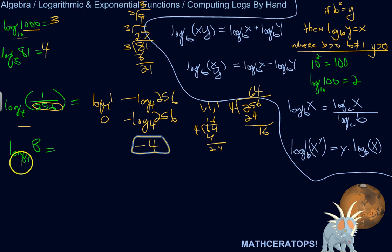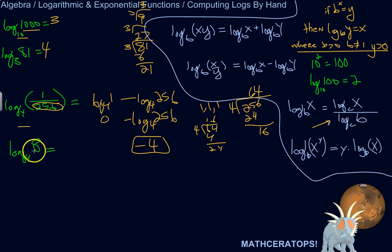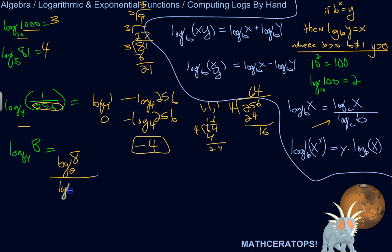Let's look at one more: log base 4 of 8. This is asking to what power do I have to raise 4 to turn it into 8? 4 squared is 16, so it's not a whole number. Think about the change of base property — is there a way to rewrite this so it's easier to calculate? Notice that both 4 and 8 are powers of 2: 2 squared is 4, and 2 cubed is 8. So converting to log base 2, this is equivalent to log base 2 of 8 divided by log base 2 of 4.